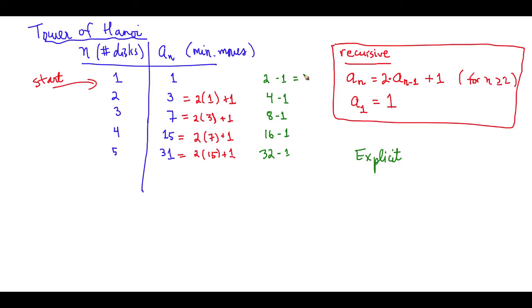So if we try to find some sort of pattern here, we can express this in terms of powers of 2. So this is really 2 to the first minus 1. This is 2 to the second minus 1. This is really 2 to the third minus 1.